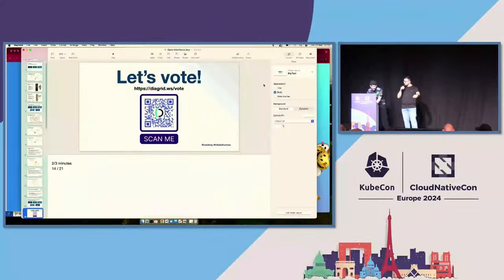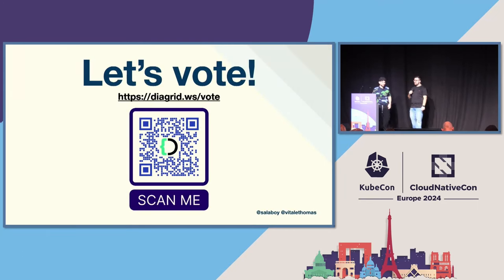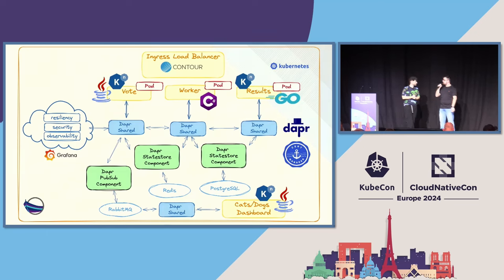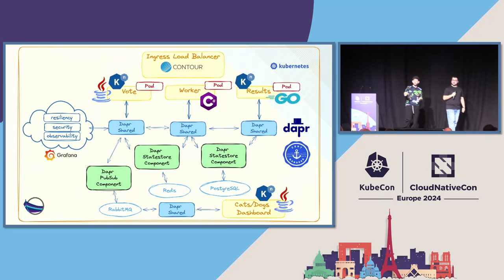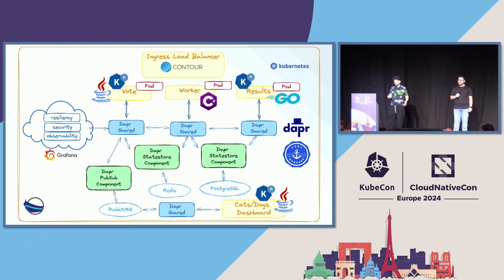Let's talk about the tools we're using. That's how the architecture looks — there's a lot going on. We're using a bunch of open source CNCF projects to get this up and running. It's running on Google Cloud, but you can run the same application on any cloud provider. Because it's a bit complicated to look at all at once, let's break it down.